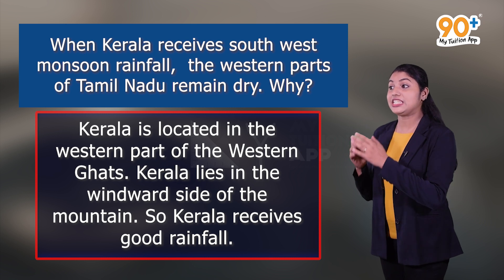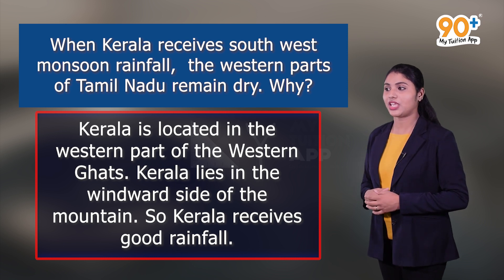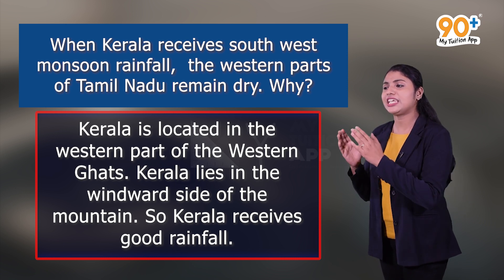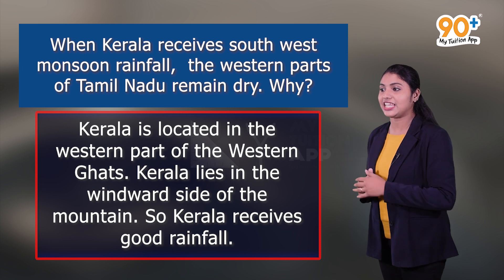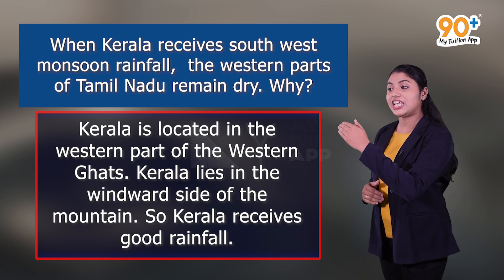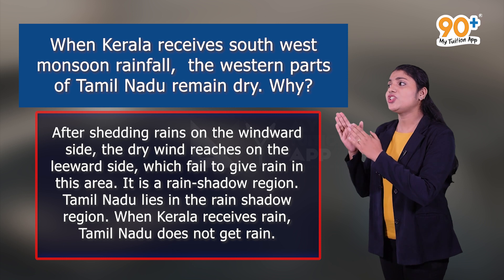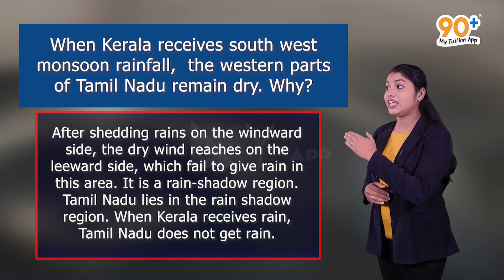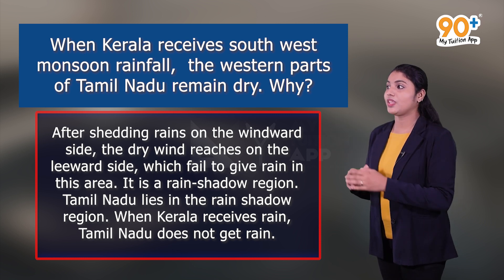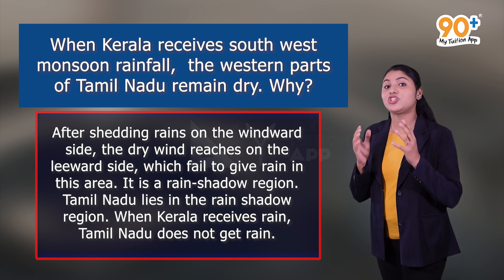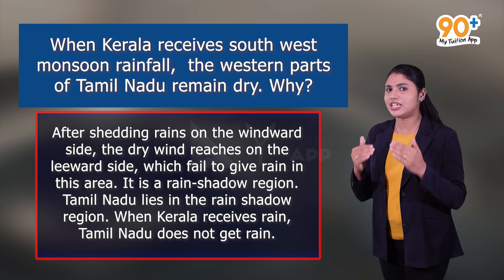Kerala is situated on the western part of the Western Ghats, so it receives good rainfall on the windward side. After shedding the rains on the windward side, the dry wind reaches the leeward side, which fails to give rain. Tamil Nadu lies in this rain shadow region, and therefore Kerala receives rain while Tamil Nadu does not.